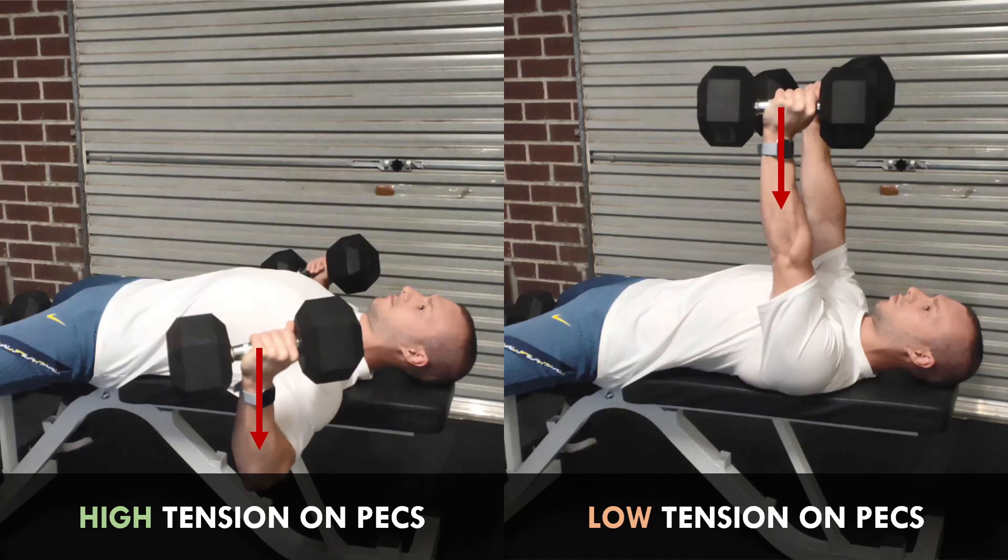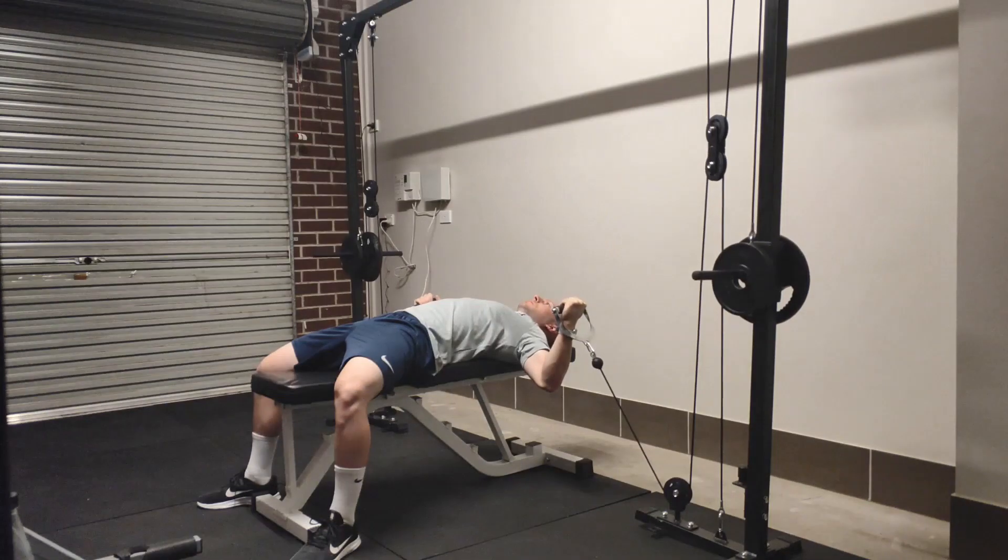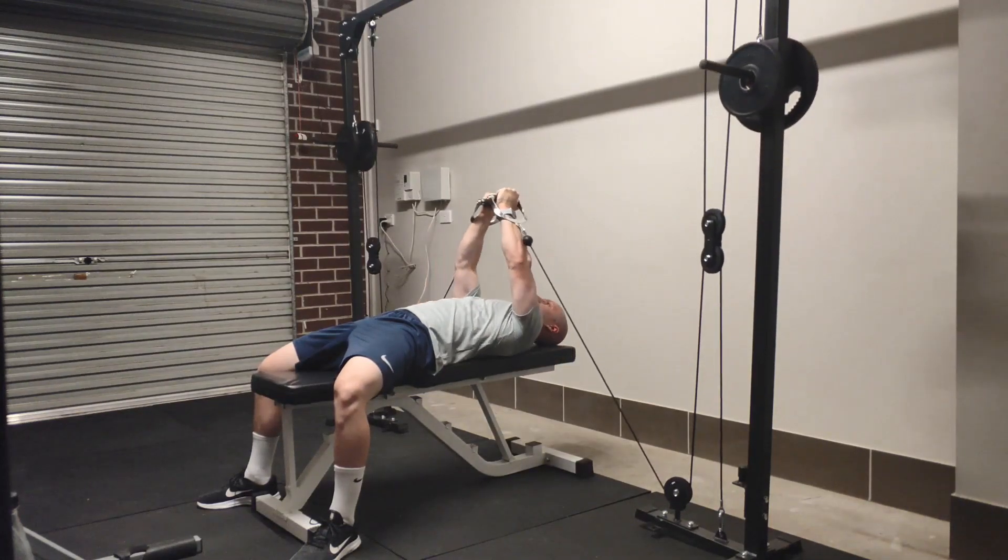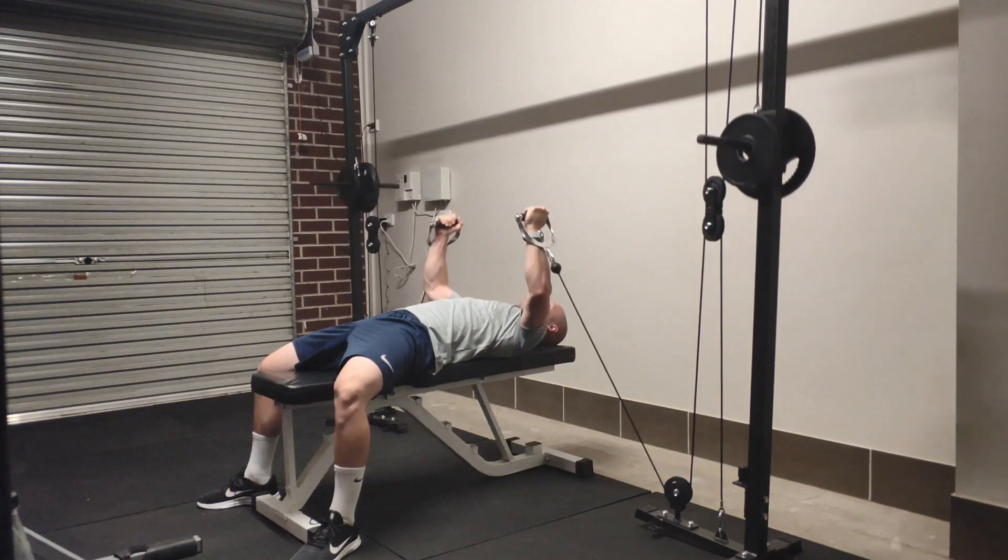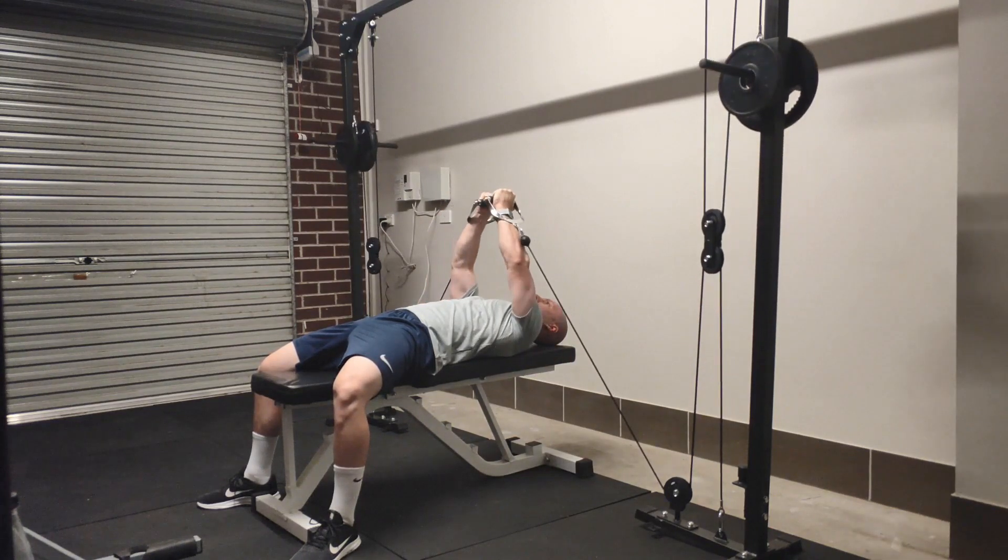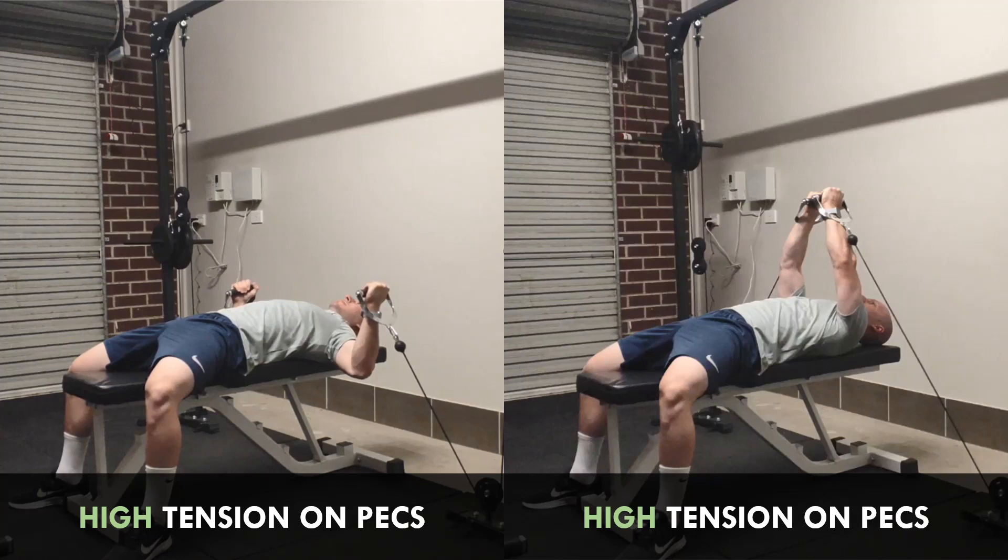In this case we could provide the pecs with a more favourable tension curve by switching the exercise to something like a cable fly. A cable fly will provide a much more constant tension curve from the start to end range. This is because the angle of resistance is not vertical like gravity, it comes from the angle of the cable. This will allow the pecs to be stressed at multiple different ranges and requires more total work with each repetition.